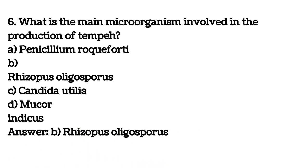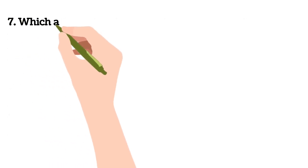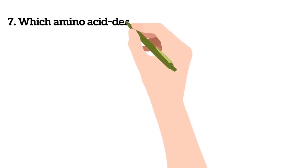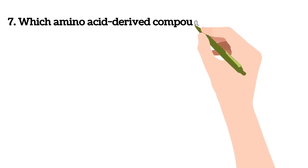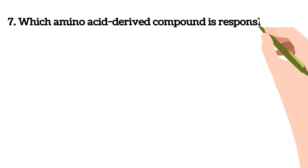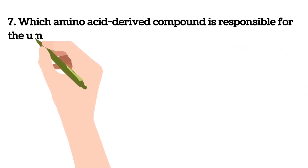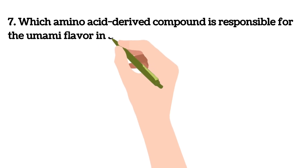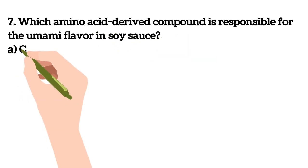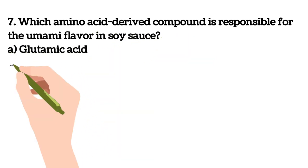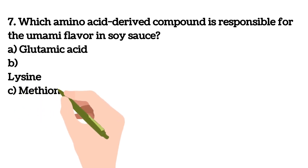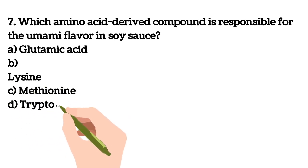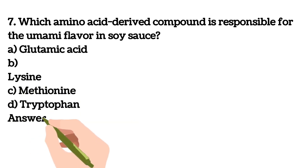Seventh question: which amino acid-derived compound is responsible for the umami flavor in soy sauce? A) Glutamic acid, B) Lysine, C) Methionine, D) Tryptophan. Your answer is A, Glutamic acid.